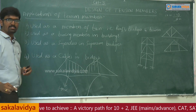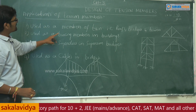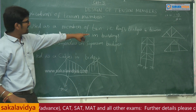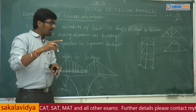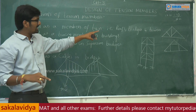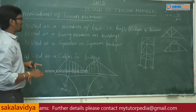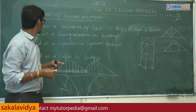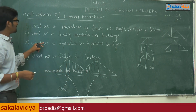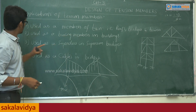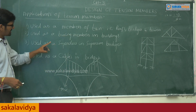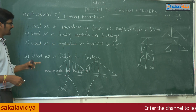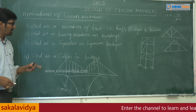To summarize the applications: tension members are used as members of truss elements in roofs, bridges, and towers — including cell phone towers. They are used as bracing members in bridges, as suspenders in suspension bridges, and as cables in bridges.